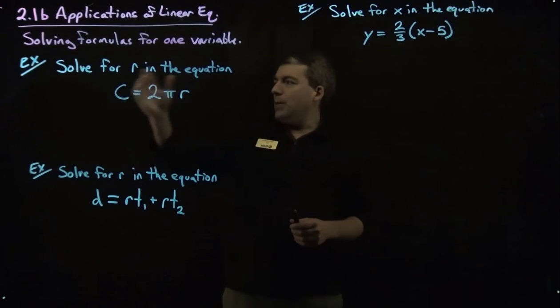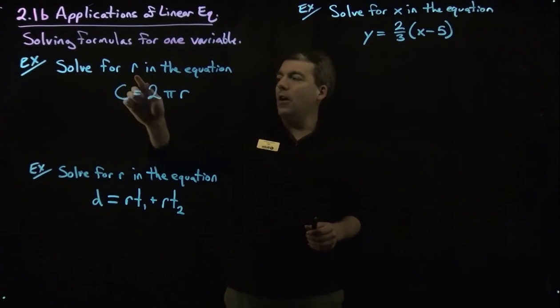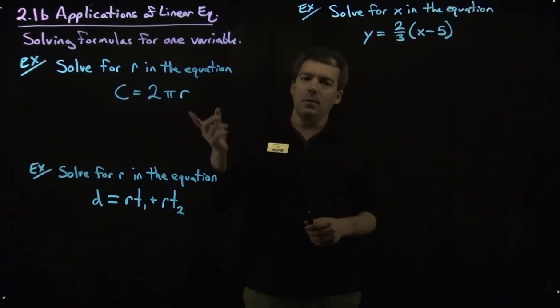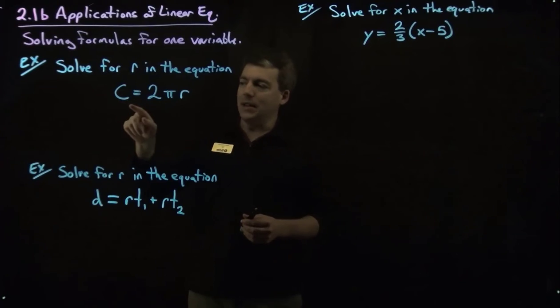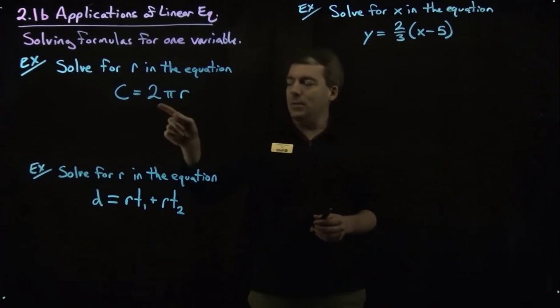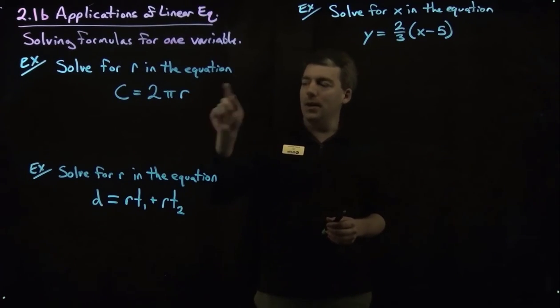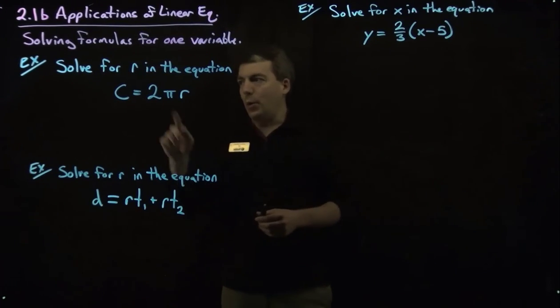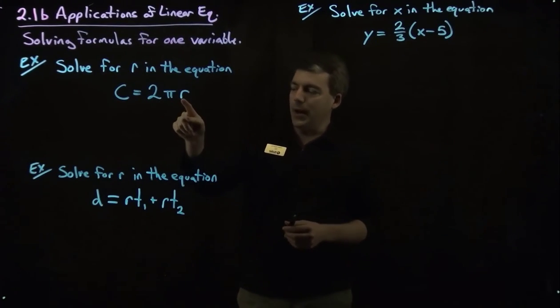So here in this first example we're asked to solve for r in the equation c equals 2 pi r. Now you might recognize that formula, that's the circumference of a circle given by 2 pi times the radius of the circle. We want to solve this for r, we want to solve for the radius here.